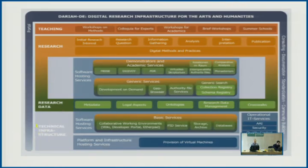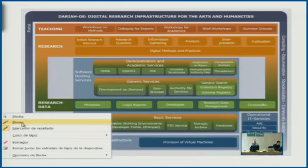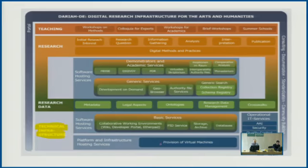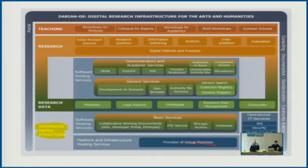At the bottom we see a thing called technical infrastructure, which foresees the provision of virtual machines that we need for our databases to run and to store the data. That's really a basic thing that every project needs — you have to be able to rely on your databases and on this infrastructural layer. You need PIDs at some level. PID service is also part of the technical infrastructure, and all these points come into play when building a digital edition.